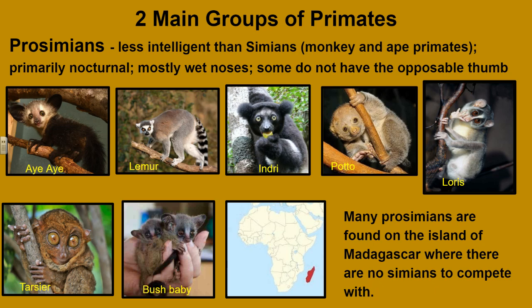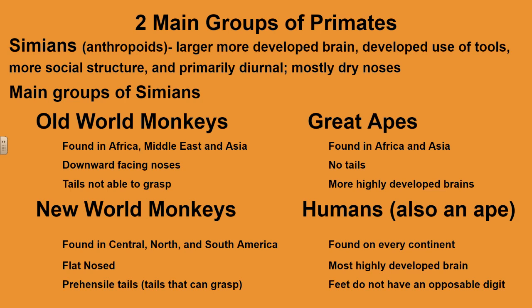The other group would be the simians, also more correctly identified today as anthropoids. These are large, with a larger, more developed brain. They have developed the use of tools and have a more complex social structure. They are primarily diurnal, so they're active during the daytime, and they have mostly dry noses, so they rely more on sight than on smell.